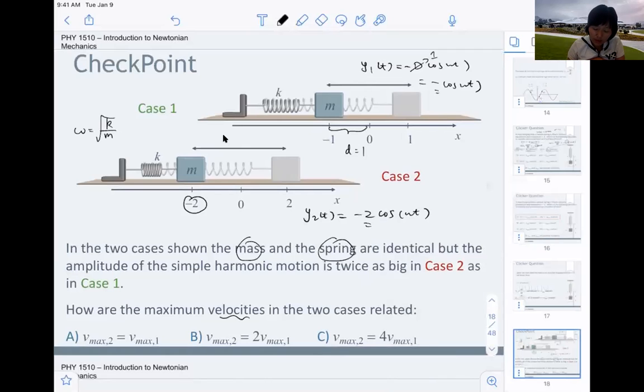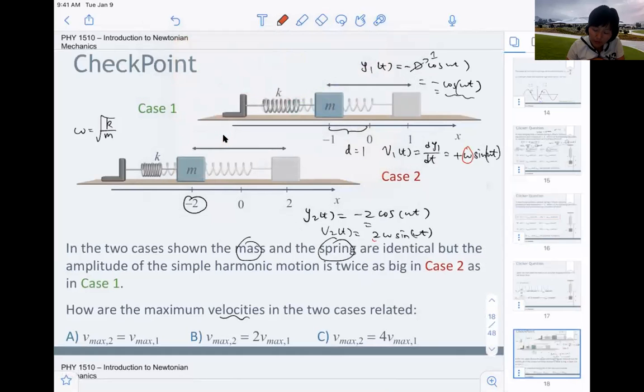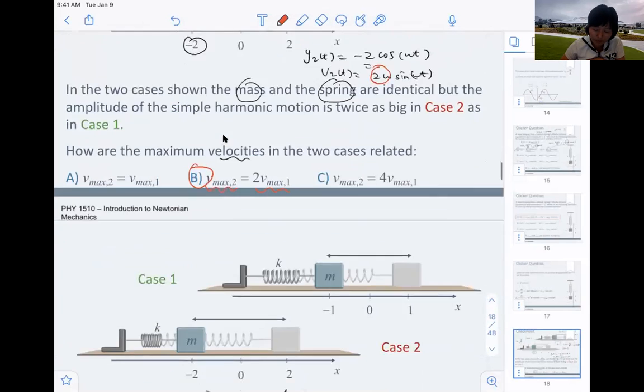Now for the maximum velocities. To get the velocity in case one, v is dy/dt. You take the derivative with respect to cosine, you get another negative, so it's omega sine omega t. For velocity in case two, you take another derivative, so two omega sine omega t. The maximum value for velocity in case one is omega. The maximum value for velocity in case two is two omega. So v max in case two is twice as much as velocity in case one. So B is correct.